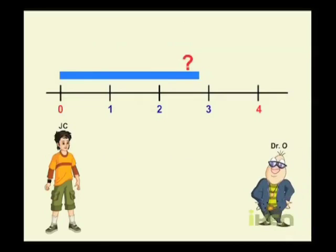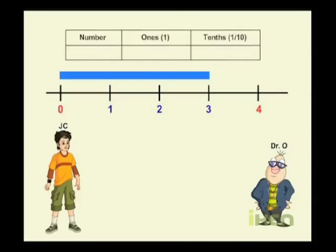Dr. O to the rescue! Dr. O tells J.C. that the number 2.3 can be written in the place value table like this.